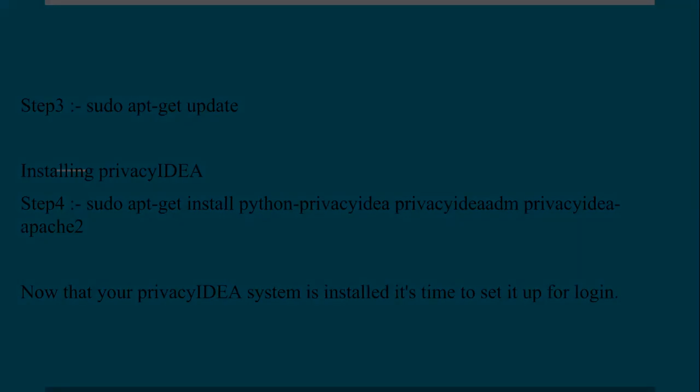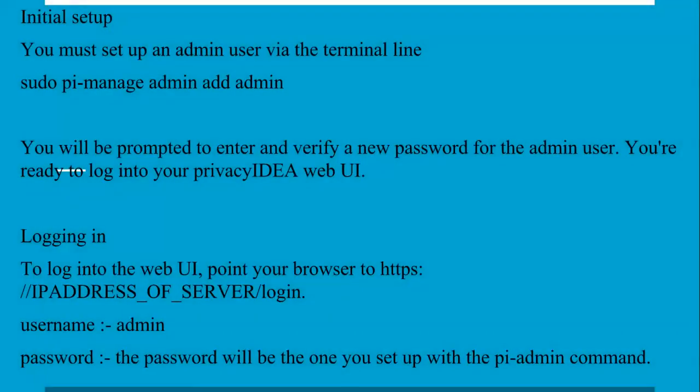Step 4 complete. Now you must set up an administrator user via terminal. You need to use the command: sudo pi-a manage admin add admin. Once that is done, it's time to log in. Open the link by typing your system's IP address to check which server you have installed it on.